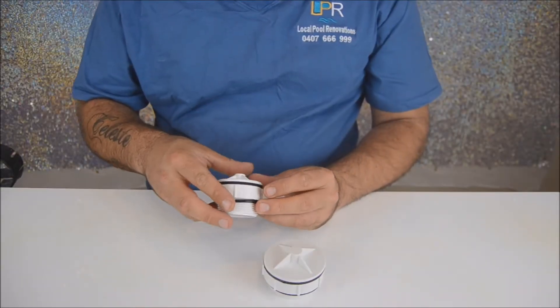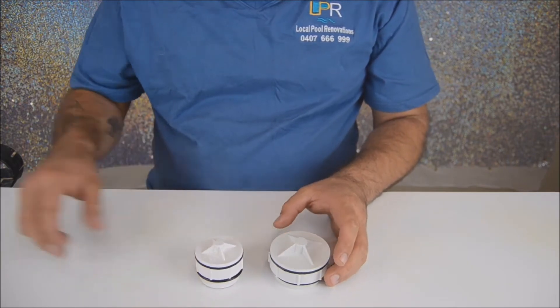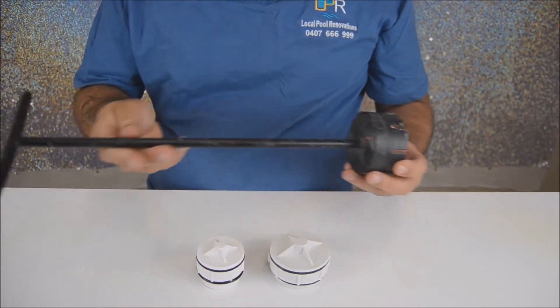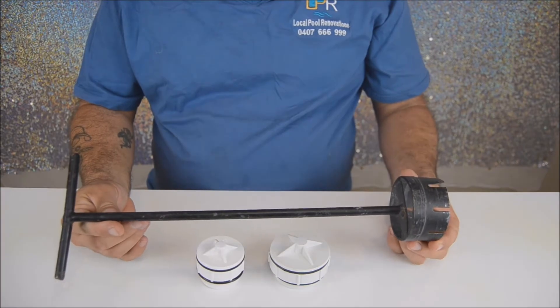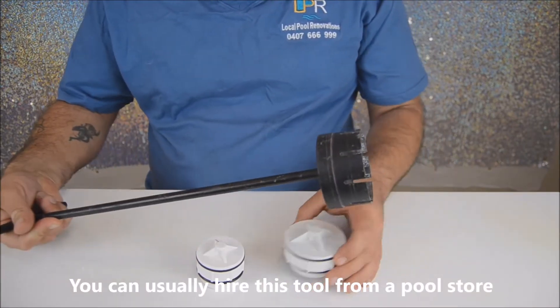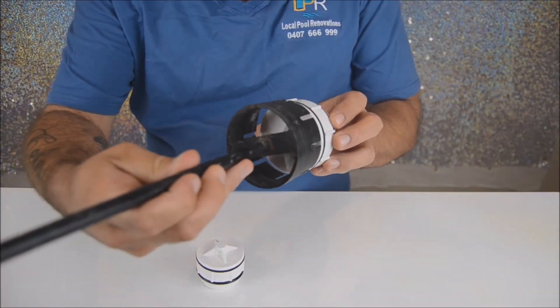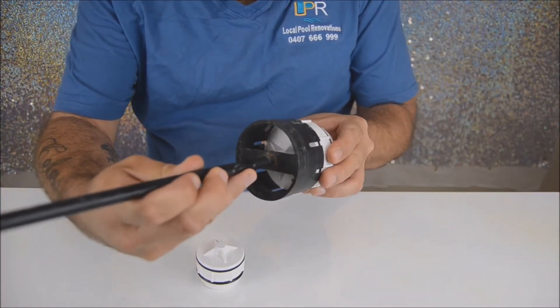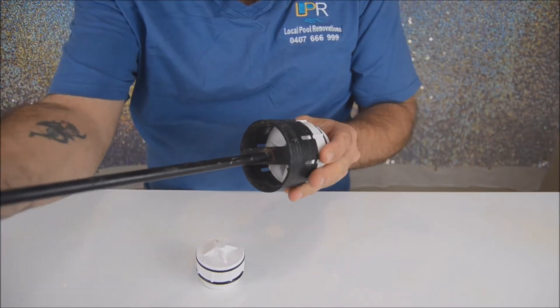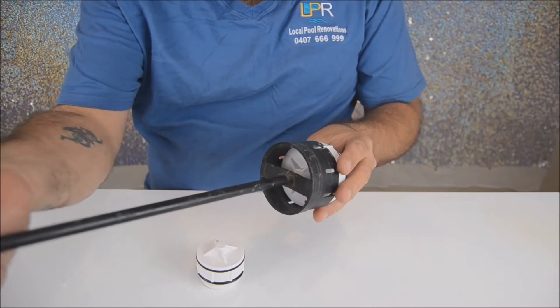In order to remove the hydrostatic valve, you're going to need a hydrostatic valve removal tool. The removal tool fits into the hydrostatic valve like this. You just twist it in and then you can twist it out.